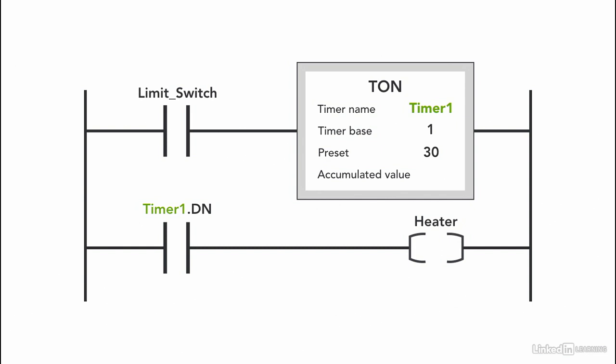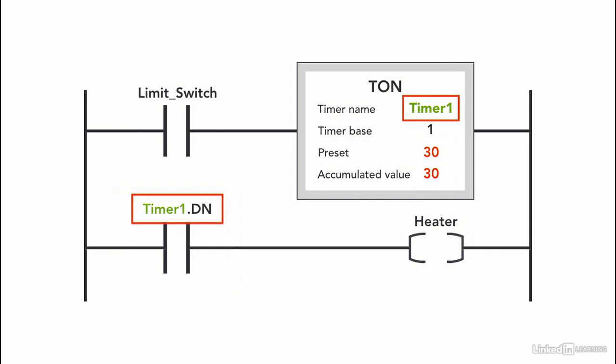We use an XIC instruction for the timer done bit and use the heater as the output instruction. Note that during timer timing, the done bit is not true, and the heater is only on when the timer is done timing — when the done bit is true and the accumulator equals the preset. Also note that when using the status bit, we use the same timer name.